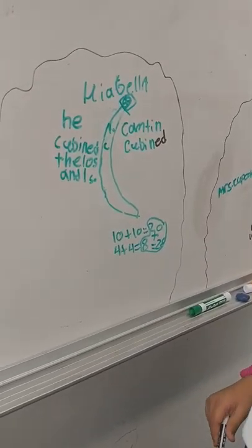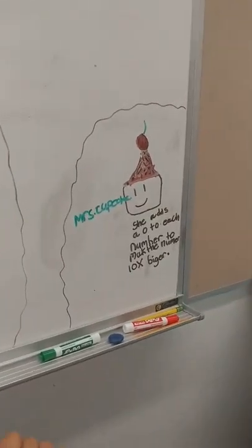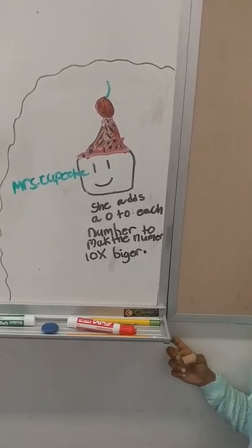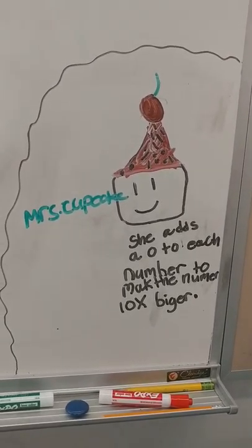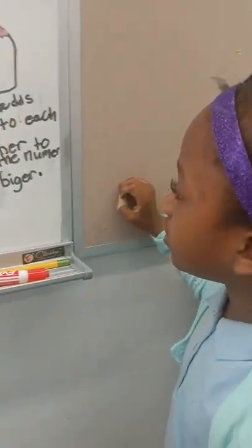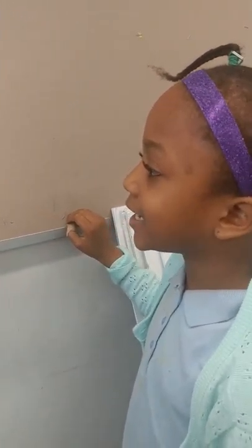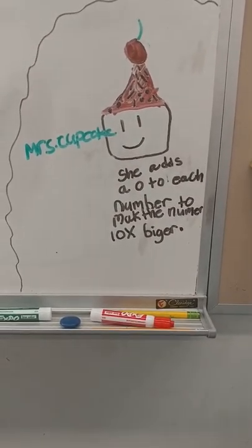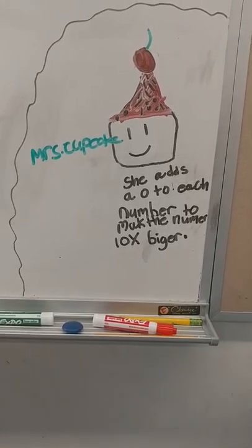Fantastic. Wow. And Chelsea, who's this? Mrs. Cupcake. Tell us about Mrs. Cupcake. She adds a zero to each number to make it ten times bigger. Wow. Mrs. Cupcake is sweet. That's so cool.